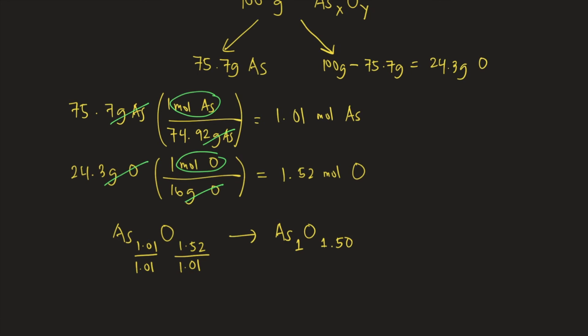So in order to get rid of the 0.50, we can multiply the subscript of oxygen by 2. So times 2. So 1.50 times 2 is 3.